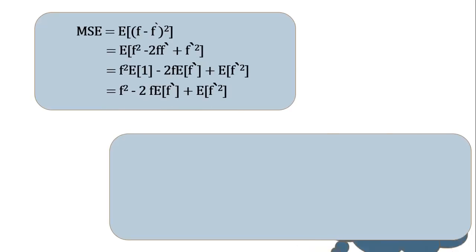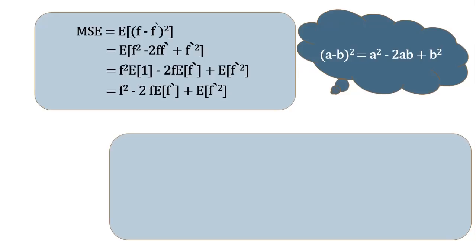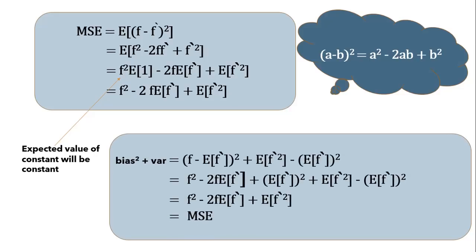Let's see the mathematical derivation. We apply the (a − b)² expansion to the error equation and find the expected value for each term. Note that the expected value of a constant is always the constant. We arrive at an equation of f² minus twice f times the expected value of the estimated function plus the expected value of the squared estimated function. We then prove that squared bias plus variance equals the mean squared error value plus some irreducible error. By this, we can reduce error and prevent the model from high bias and variance, or overfitting and underfitting.